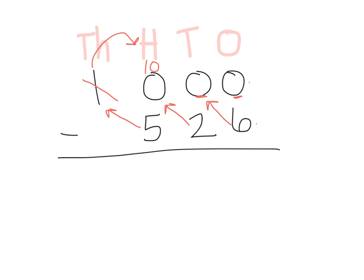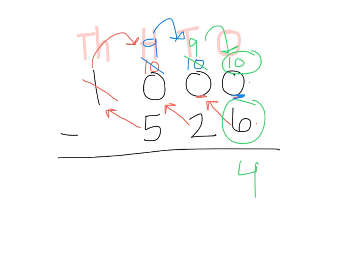The thousands place is going to save us today. We're going to cross off 1,000 and trade it for 10 hundreds flats. We're going to take one of those hundreds flats and ungroup it to make 10 ten-sticks. But we still don't have any numbers in the ones place, so we're going to take one of those ten-sticks and ungroup it into 10 ones. Now: 10 take away 6 is 4; we have 9 take away 2, which is 7; in the hundreds place we have 9 take away 5, which is 4. Our answer is 474.